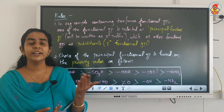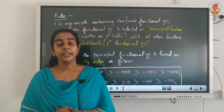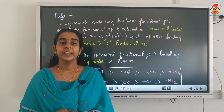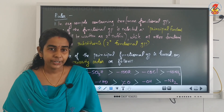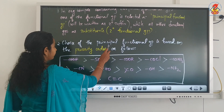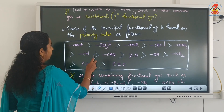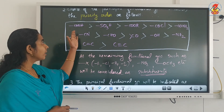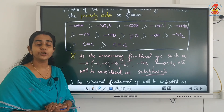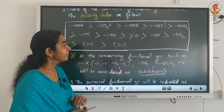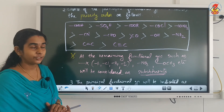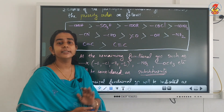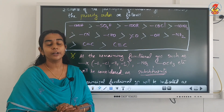Now, what is the criteria? If an aldehyde and an alcohol group are both present, which one should be selected as the principal functional group? That depends on the priority order. According to the priority order, carboxylic acid has the highest priority. So COOH — carboxylic acid — is having highest priority, followed by sulfonic acid, esters, acid chlorides, and amides, which are derivatives of carboxylic acids.